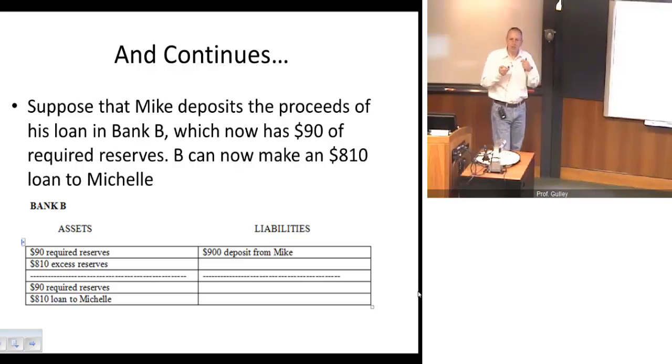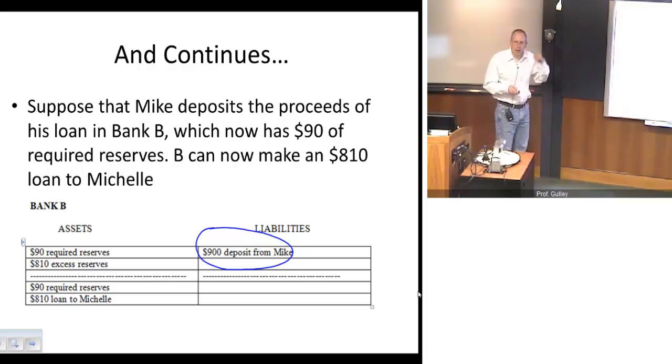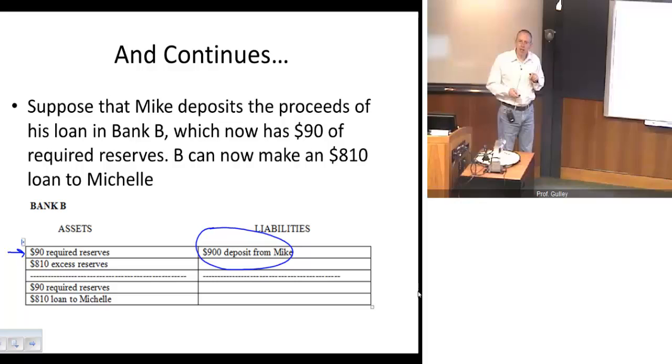We've started with one bank and one deposit and one loan. Well, that's only the beginning of the process. We want to carry on. What happens to that $900 loan? Suppose that Mike takes his $900 loan and deposits it in a different bank. We don't need that to happen. We could keep all this same action within the confines of Bank A. But it makes it a little more convenient if we think of the flow of money here, follow the money, so to speak, to go from bank to bank to bank. So now, Bank B gets this deposit. Bank B gets a deposit just like before, except now instead of $1,000, it's now $900. Based on that $900 and a 10% reserve requirement, this bank, Bank B, has to hold $90 in reserves. And they now have $810 of excess reserves.